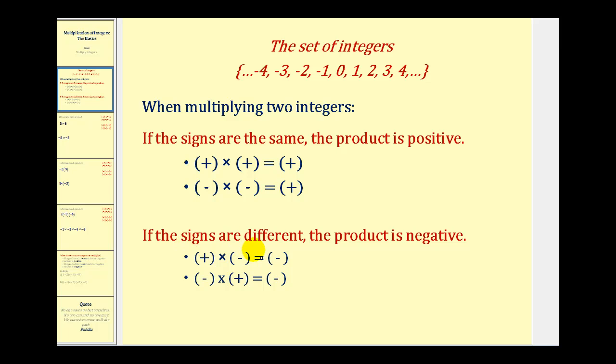If the signs are different, then the product is negative. So a positive times a negative is negative, and a negative times a positive is negative.